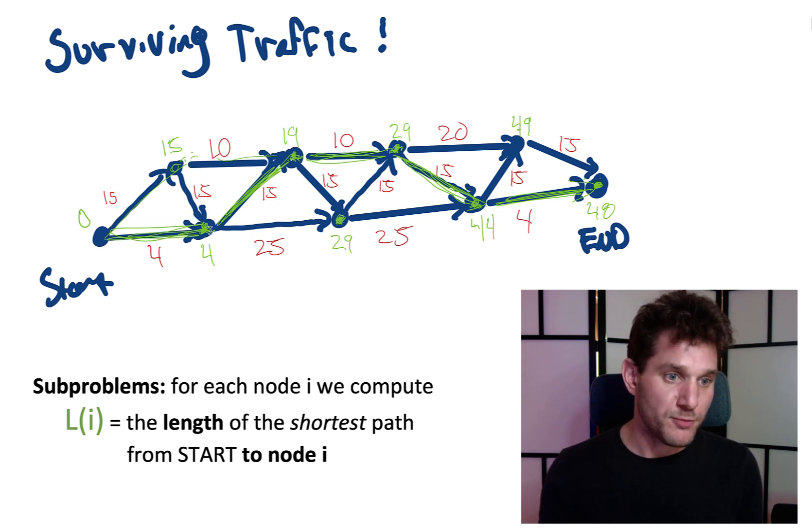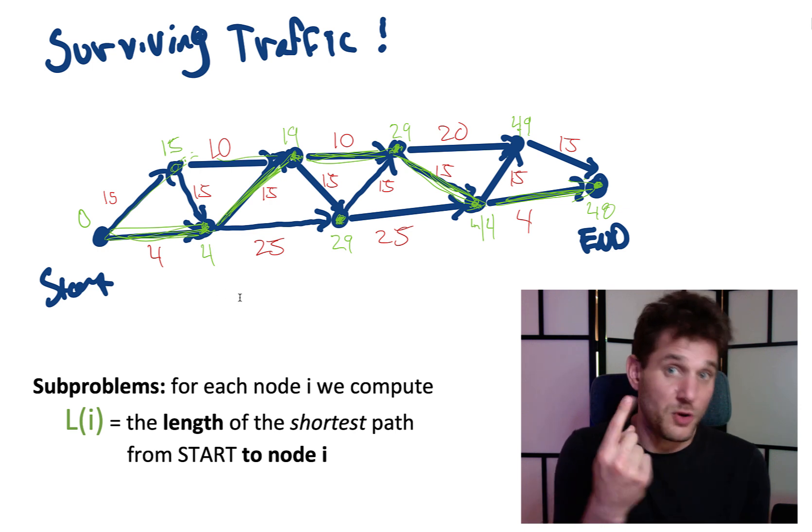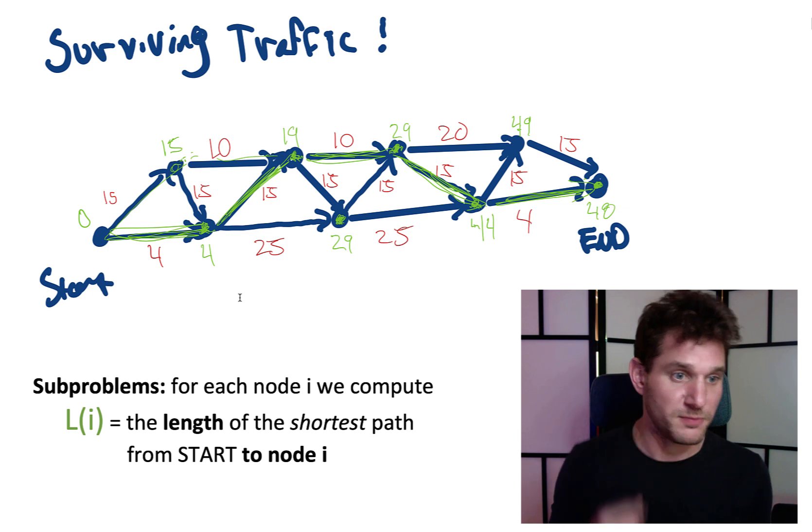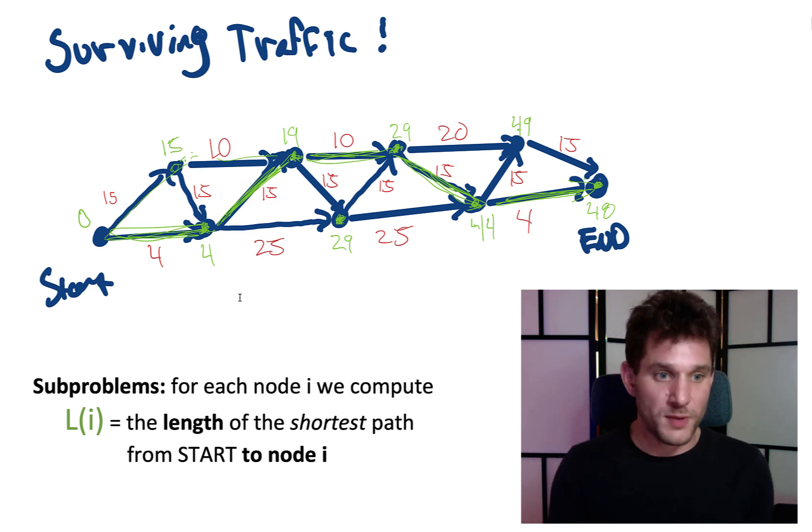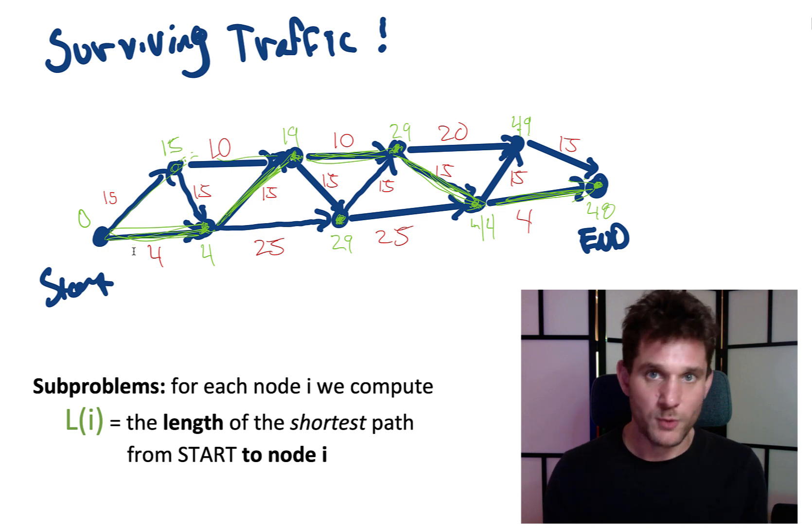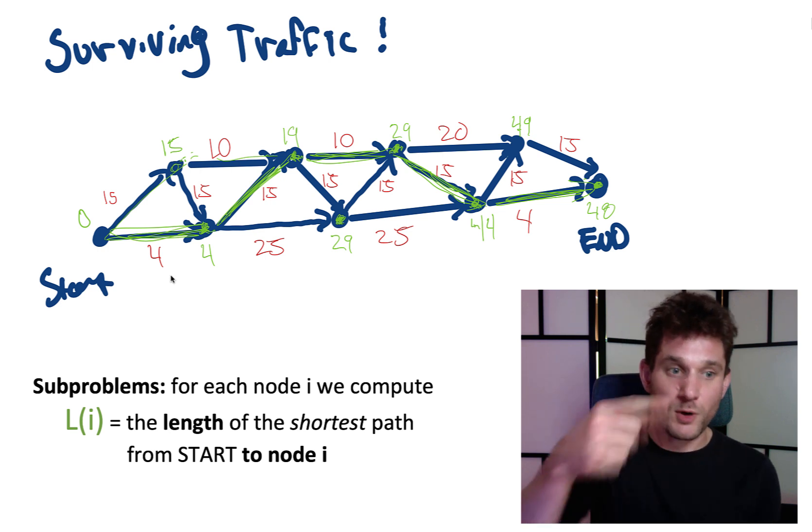For example, here we have the number 29. What was that number? If you recall, what we were computing there was the shortest path to begin at the start node and end at this particular node. So the green number 4 here, we arrived at 4 for this first node on the right. We arrived at 4 because the shortest path from the start node to that node, there's actually only one path we can take. It's through this bottom edge.